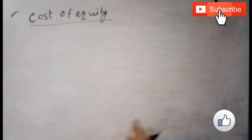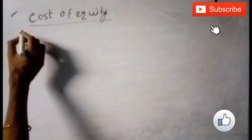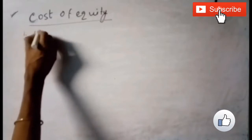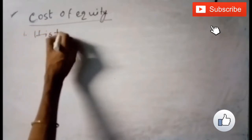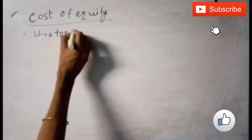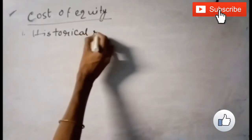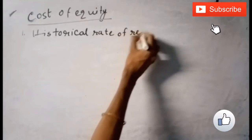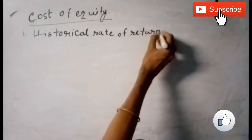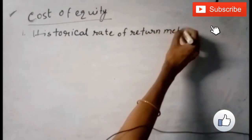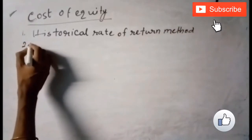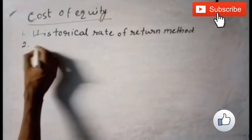We can calculate cost of equity by several methods. Number one is the historical rate of return method, and number two is the dividend price ratio method.